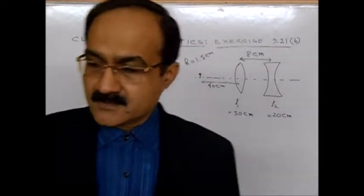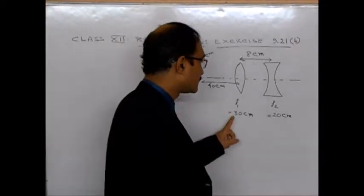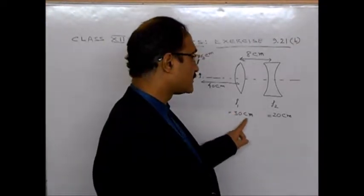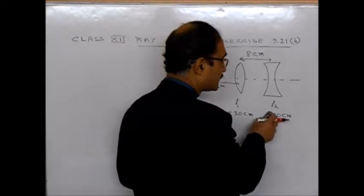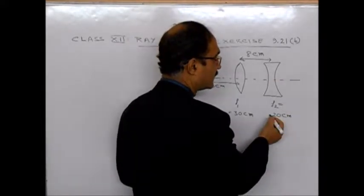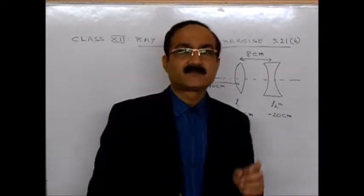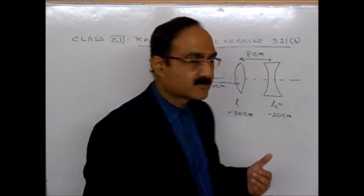Since the focal length of a convex lens is positive, so we write here plus 30 cm. And here, this is a concave lens. Its focal length is negative, so it's minus 20 cm. We should be careful about the sign conventions here.